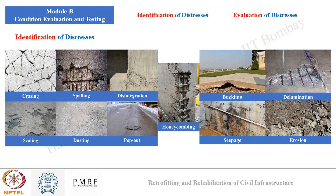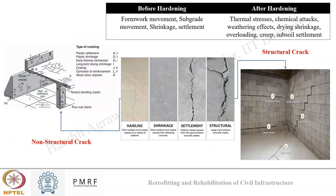In Module B we discussed condition evaluation and testing of concrete. We addressed two main points: how to identify distress and how to evaluate its intensity. In identification of distress we looked into various forms, examining 12 types: grazing, scaling, spalling, dusting, disintegration, pop-outs, honeycombing, buckling, seepage, delamination, erosion, and cracking. For cracking, we saw both structural and non-structural cracks — how they differ and in what conditions they occur.